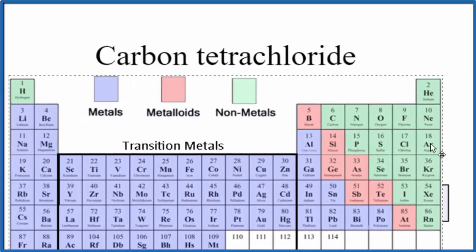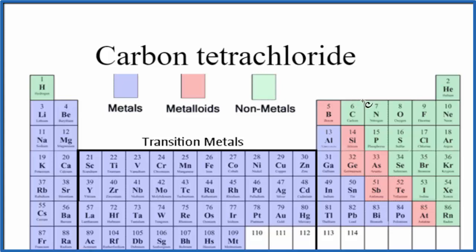So if we look at the periodic table, we can find carbon and then chlorine. And they're both nonmetals.